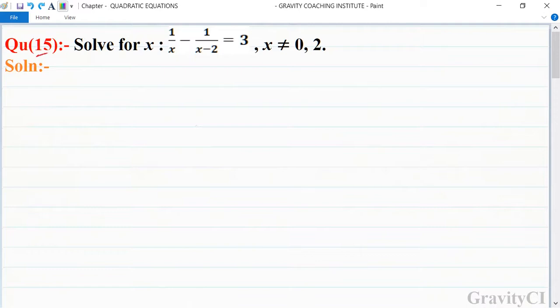Chapter quadratic equations, question number 15. Solve for x: 1 upon x minus 1 upon x minus 2 is equal to 3. So 1 upon x minus 1 upon x minus 2 equals 3.